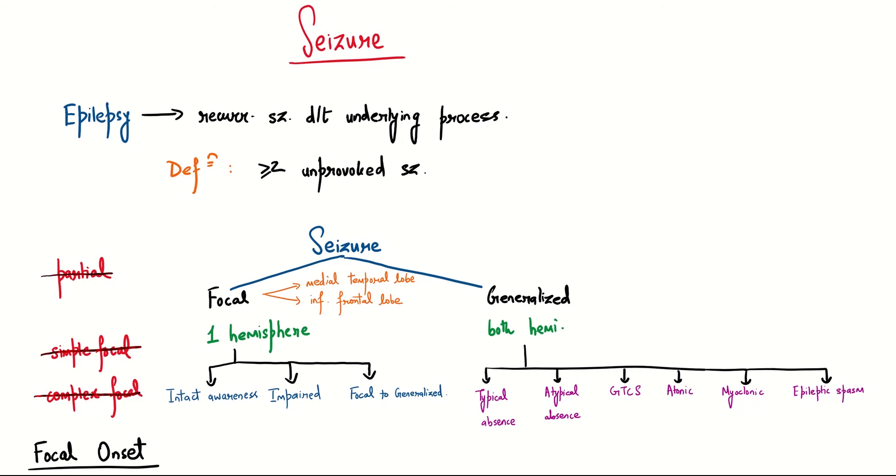Good morning everyone, today we are going to discuss seizure. The first thing you need to know is that seizure and epilepsy are two different things. Epilepsy is a recurring seizure due to any underlying process, while seizure is a one-time event. By definition in Harrison's, epilepsy is more than two unprovoked seizures.